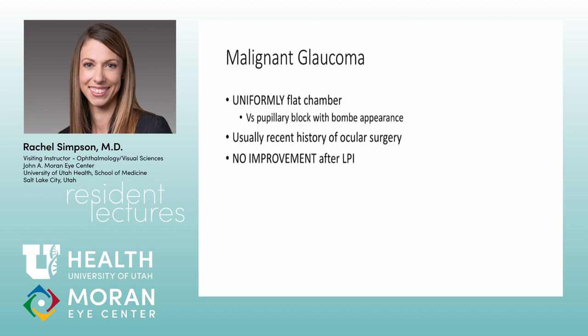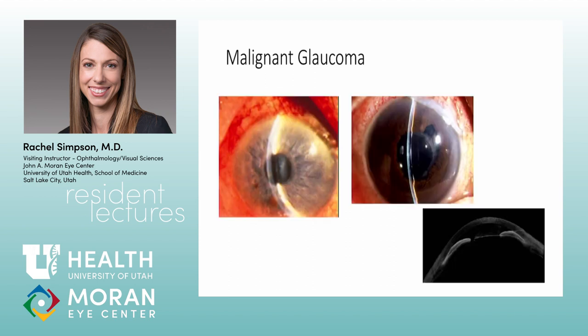Malignant glaucoma is uncommon, but I saw it maybe three times as a fellow — almost always at night. The key hallmark is a uniformly flat anterior chamber. If you see iris bombé it's not malignant glaucoma, but if everything is diffusely pushed forward and the patient had glaucoma or cataract surgery that day or the day before, think malignant glaucoma. The classic test setup: patient is super narrow, you do a PI, nothing changes — no improvement in symptoms, no improvement in pressure, angle still completely closed. No improvement after PI is the hallmark of malignant glaucoma.